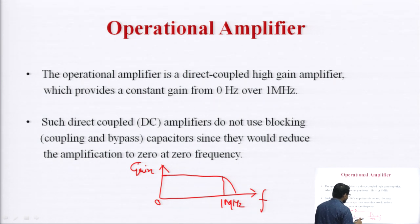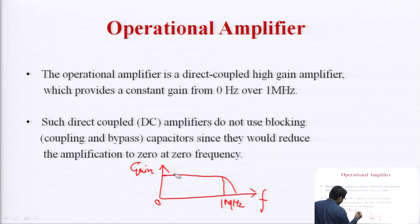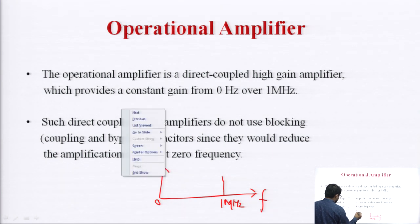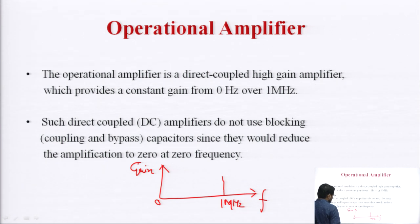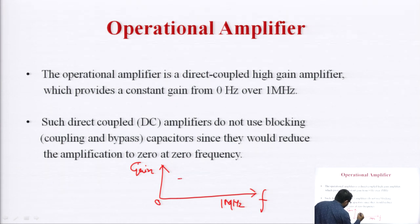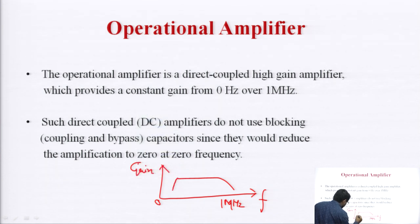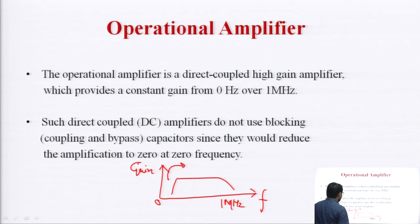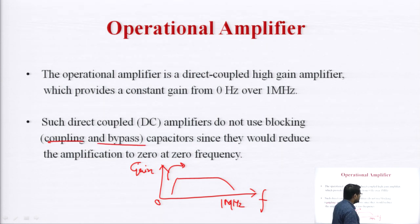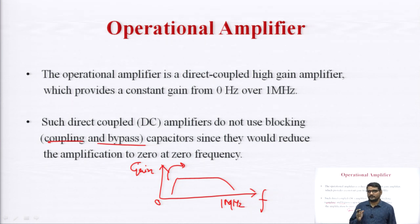If we use coupling capacitors and bypass capacitors, then the frequency curve at the lower frequency begins to decrease. We see the gain starts to decrease slightly at the lower frequency due to the blocking effect of coupling and bypass capacitors. Therefore, we never use coupling capacitors and bypass capacitors in the internal structure of the operational amplifier.